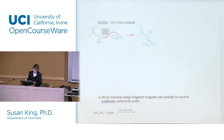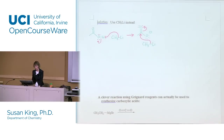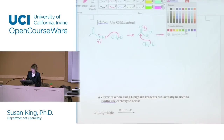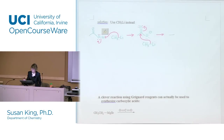The electrons are going to come from the carbon-lithium bond. We're going to attack the carbonyl carbon and kick electrons up onto oxygen — throwing electron lone pairs on the oxygen. Let's take a look at the tetrahedral intermediate we get and see if we have any leaving groups.